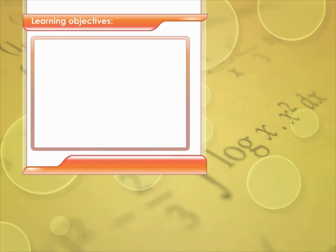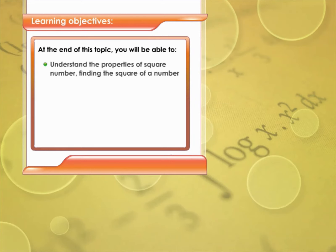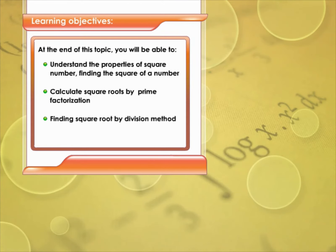Learning objectives: at the end of this topic you will be able to understand the properties of square numbers, find the square of a number, calculate square roots by prime factorization, find square roots by the division method, and describe square roots of decimals.